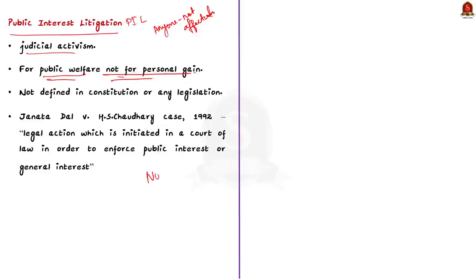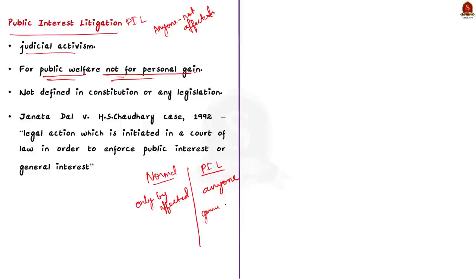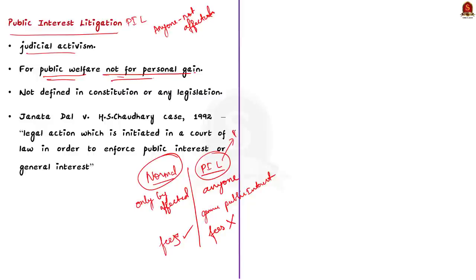What is the difference between a normal petition and a public interest litigation? Normally, a petition in a case can be filed in court only by the affected person. But in PIL, anyone can file a petition even if he is not directly affected by the case. In PIL, the person must have a genuine interest in the matter and can show the public interest is being harmed. In a normal case, a petitioner must pay the court fees, while in PIL, the petitioner is exempt from paying the court fees.